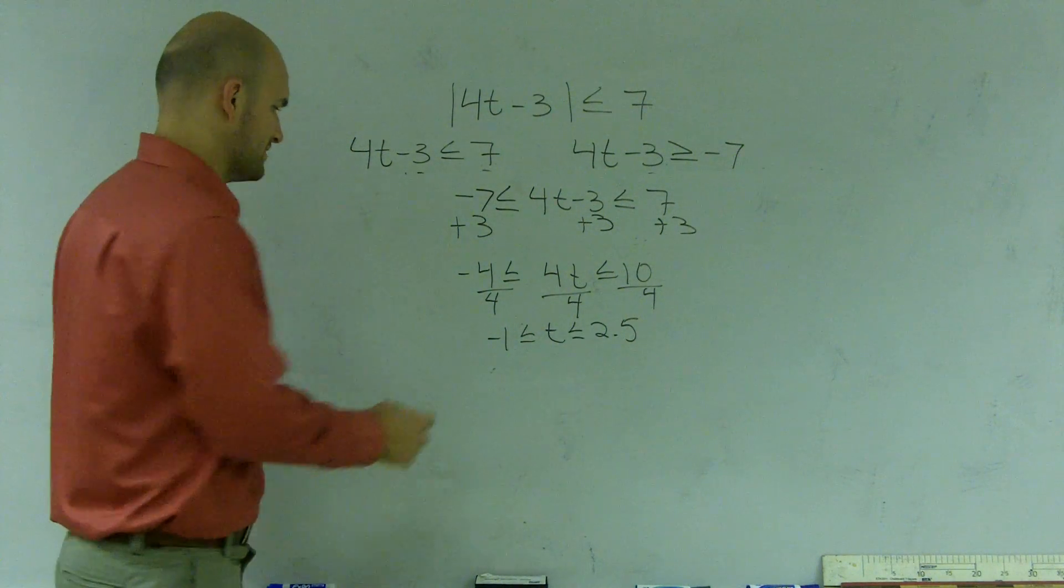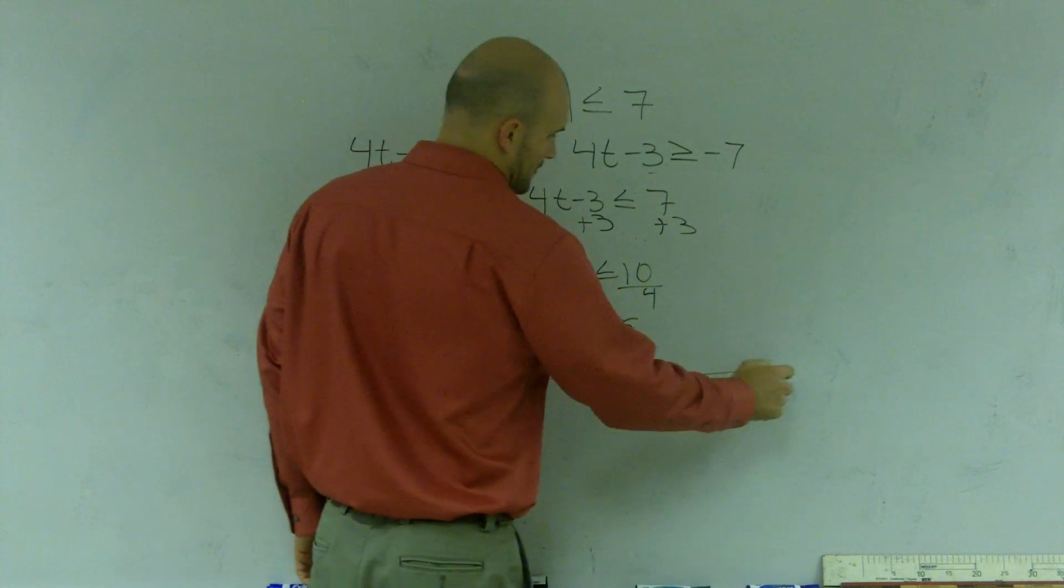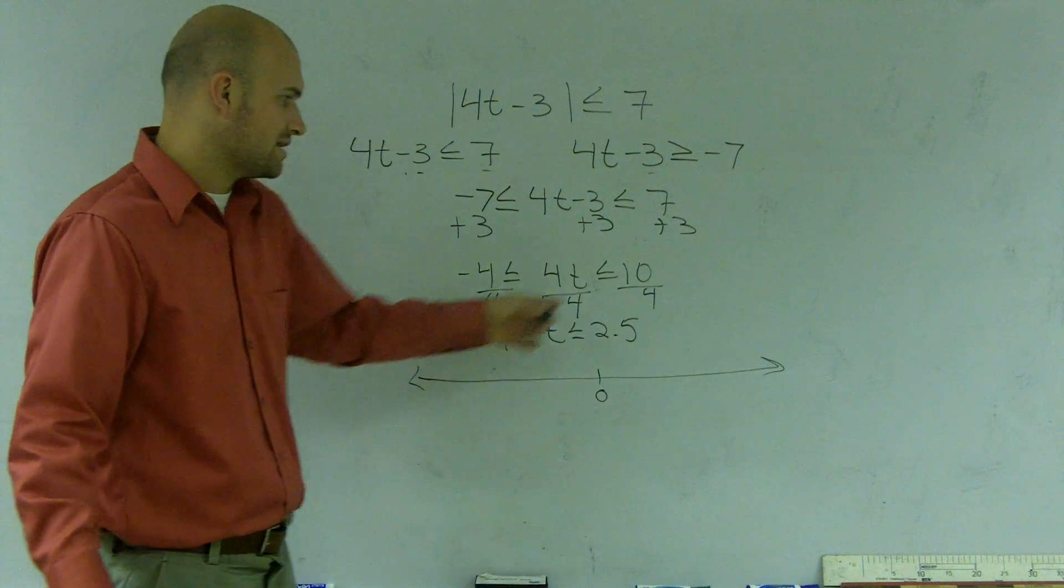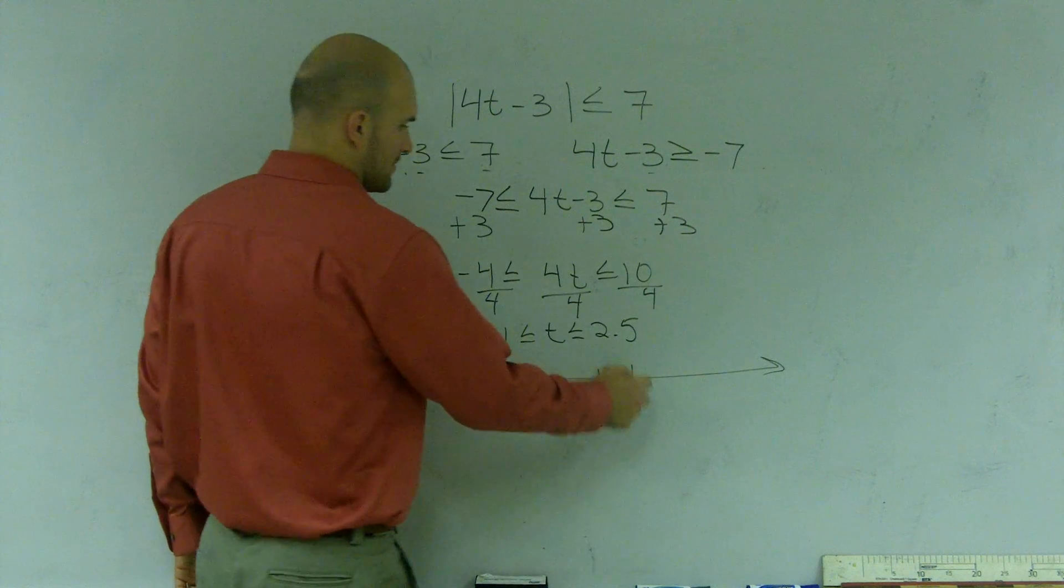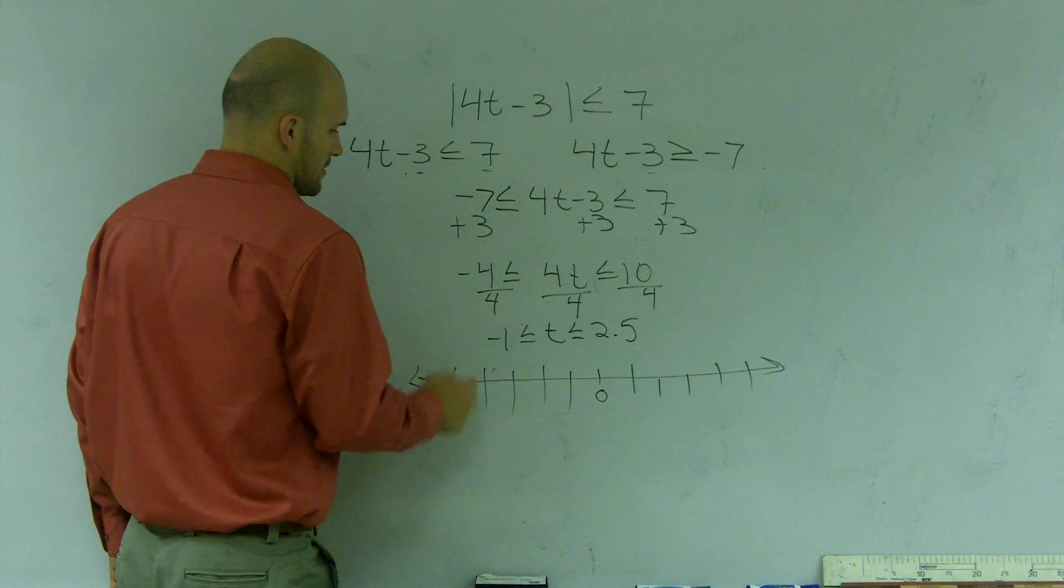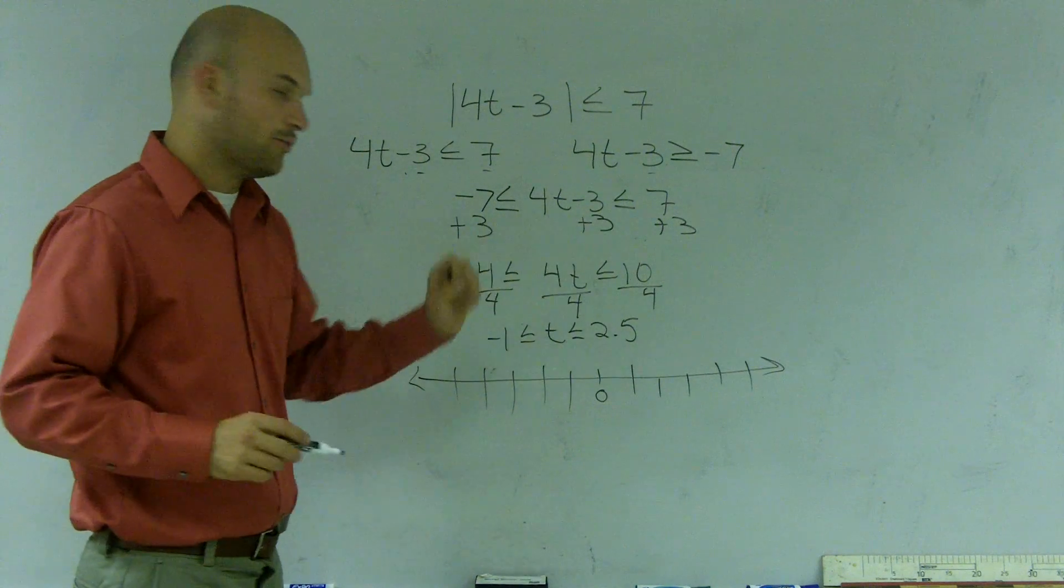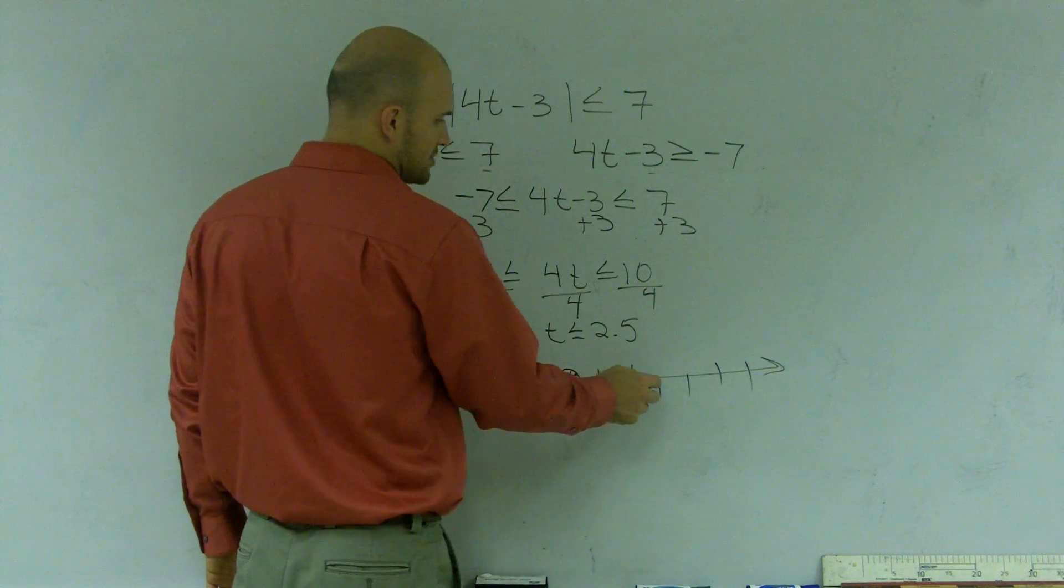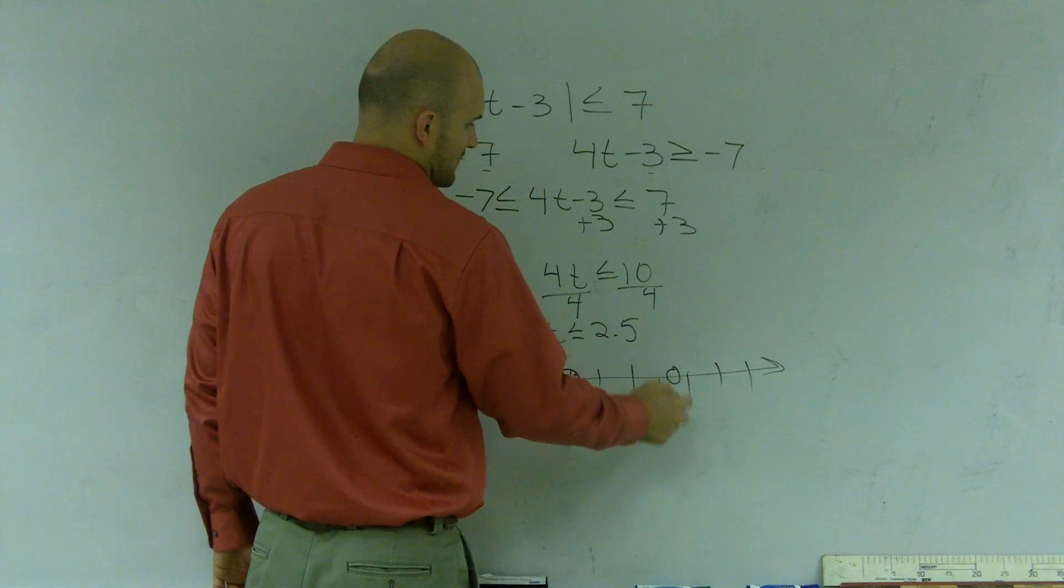So now we're going to have to graph this. So I'm going to graph a number line. And I'll have here be my 0. So it has to include the points negative 1 all the way up to 2.5. So I'm going to put a circle at each one of these points. So I go to negative 1 and I go to 2.5.